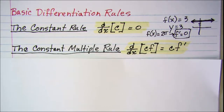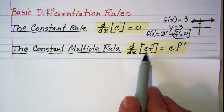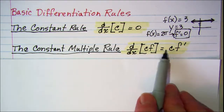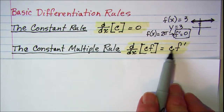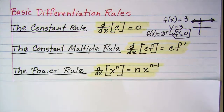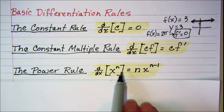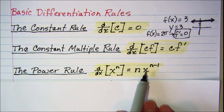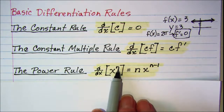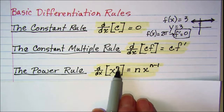Our next rule is the constant multiple rule, which says that if you have some constant multiplied by a function, to find the derivative of that product you just pull that constant out in front and multiply it by the derivative of the function. The power rule says that the derivative of xⁿ is equal to n times xⁿ⁻¹. So basically when taking a derivative of a power, bring the exponent out in front so it becomes the coefficient, and then reduce the exponent by 1.